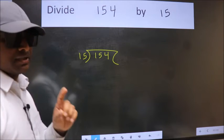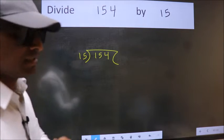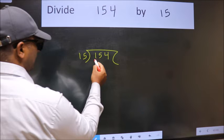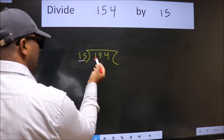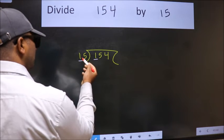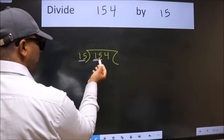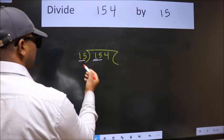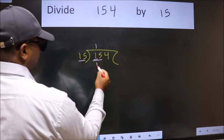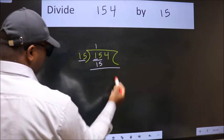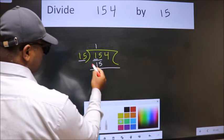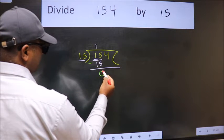Next, here we have 1, here 15. 1 is smaller than 15, so we should take two numbers. 15, when do we get 15 in 15 table? 15 once 15. Now we should subtract, we get 0.